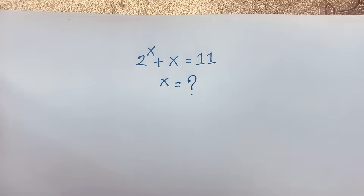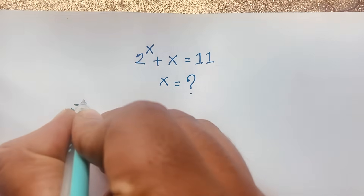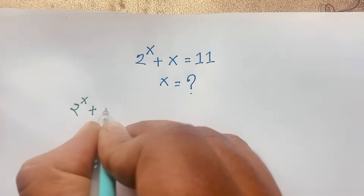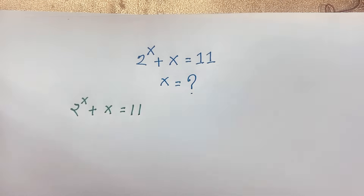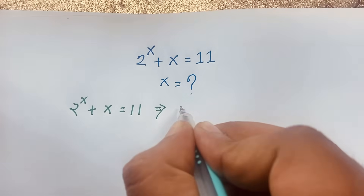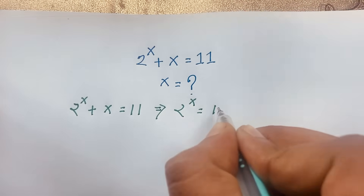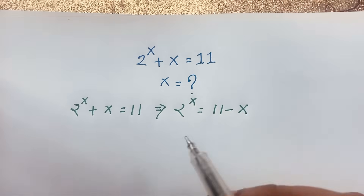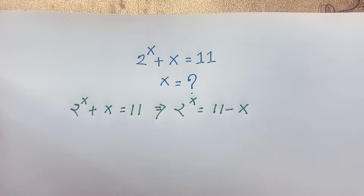But how to solve this question formally? Our question is 2 to the power x plus x is equal to 11. Now, rearranging this expression: 2 to the power x is equal to 11 minus x, moving the x to the right side as negative x.